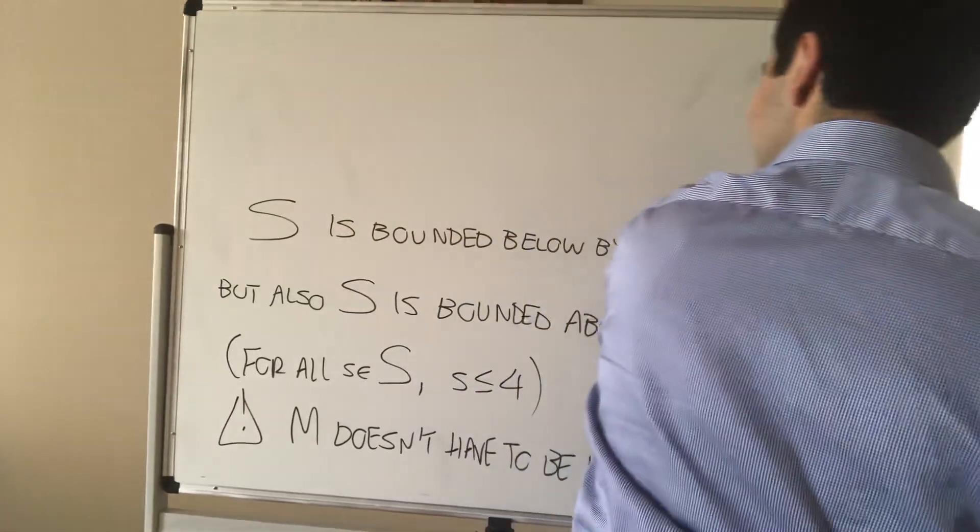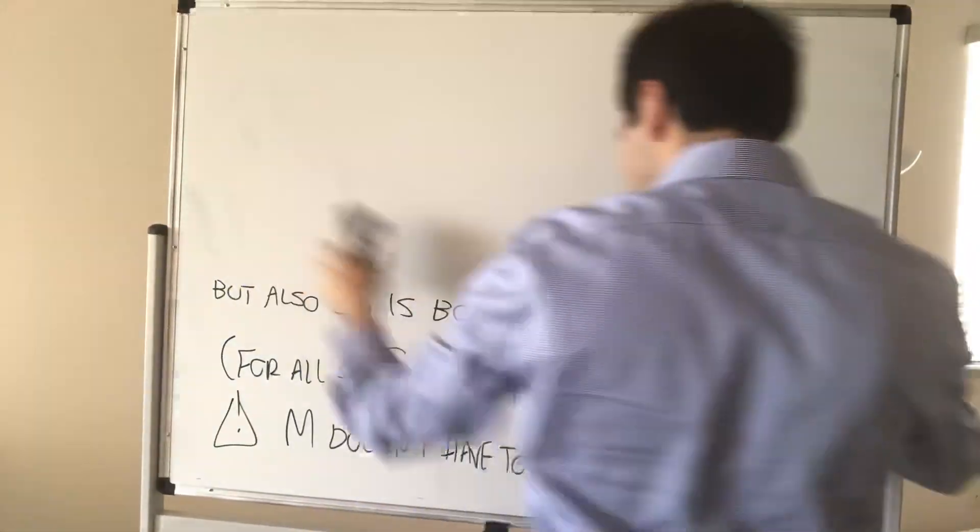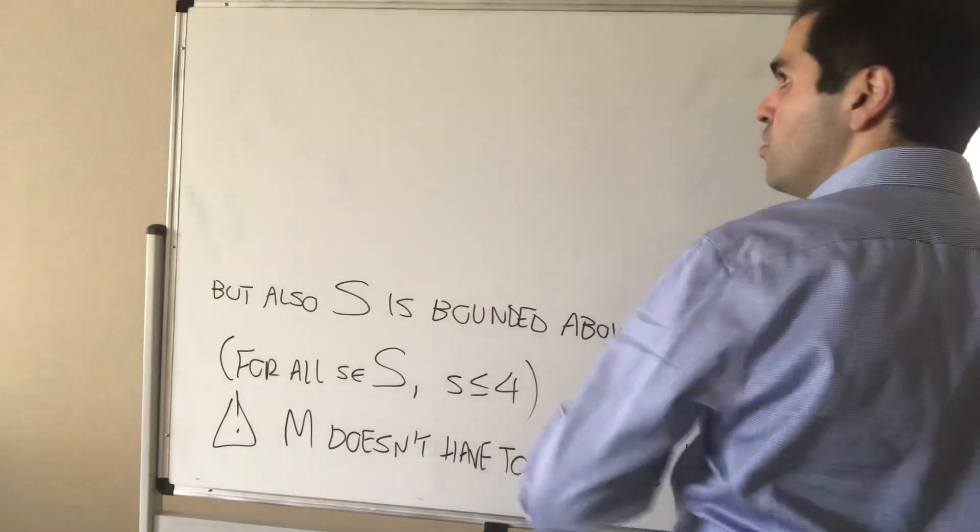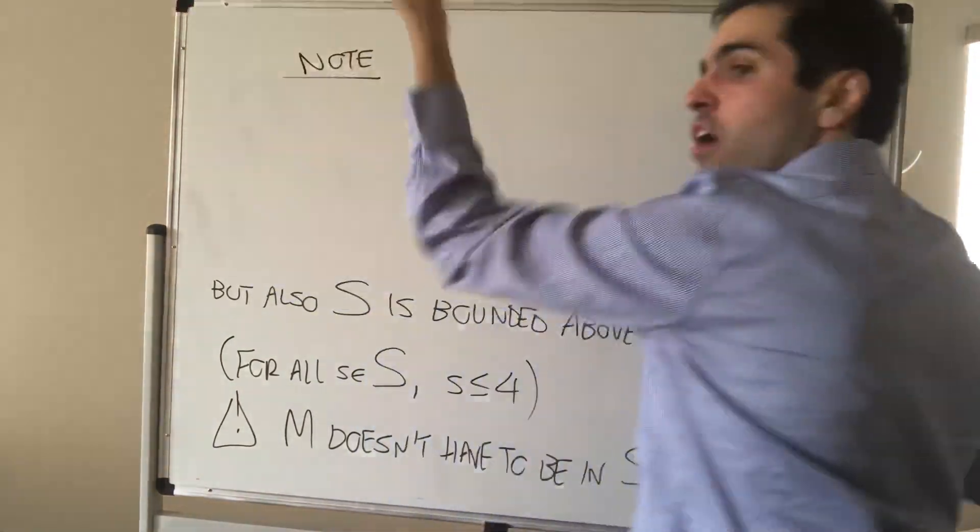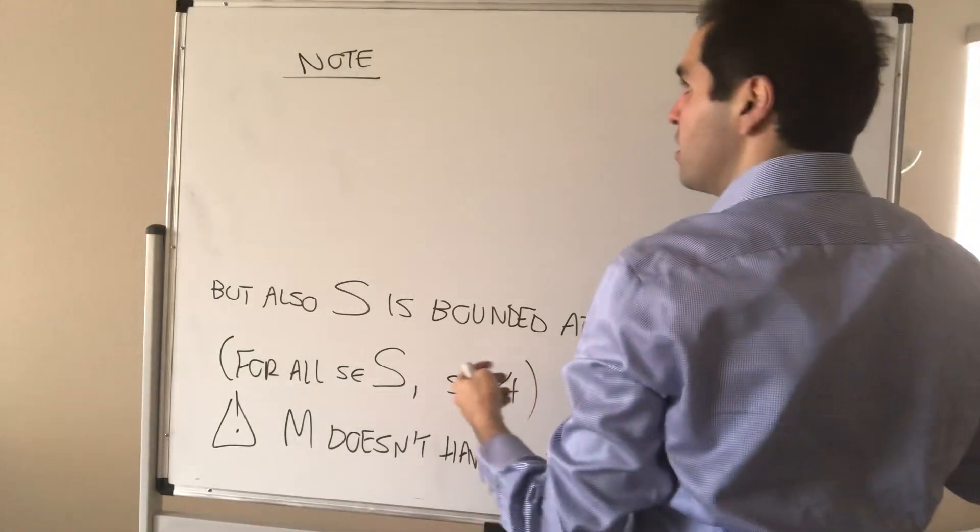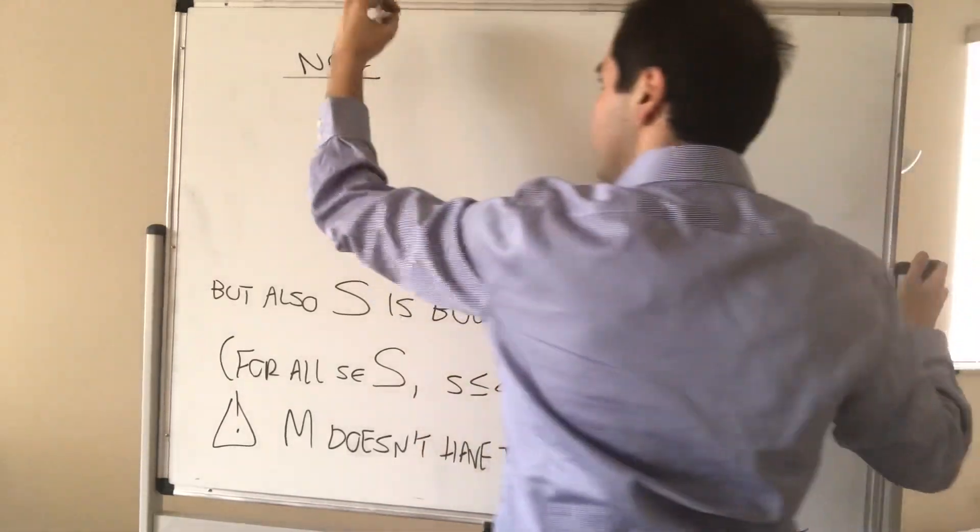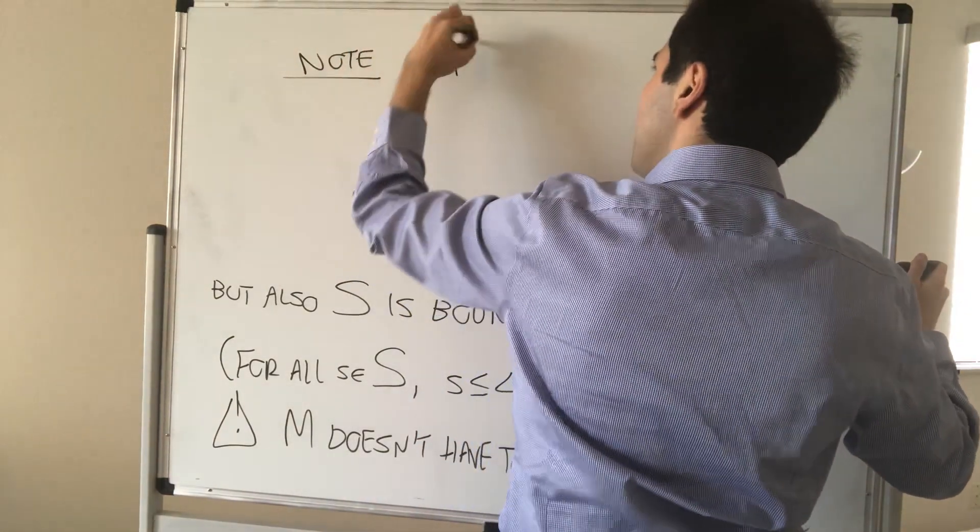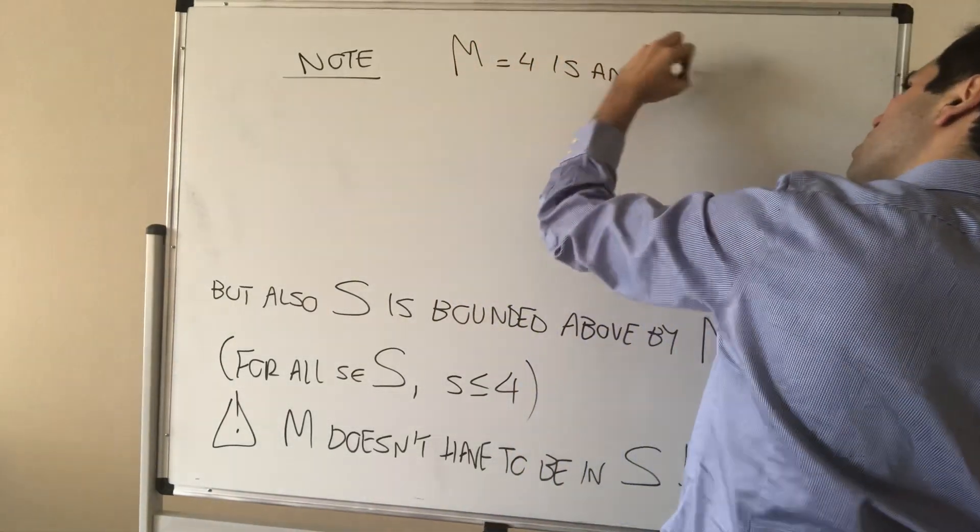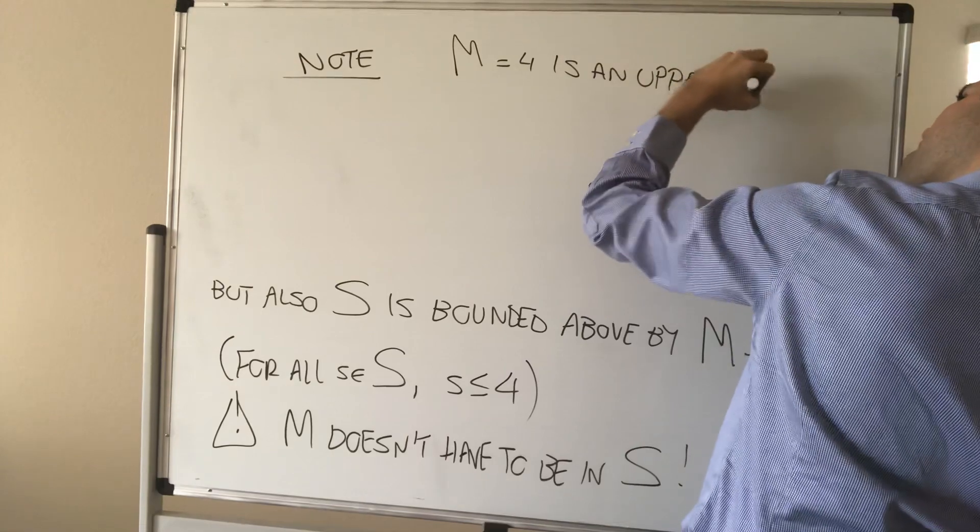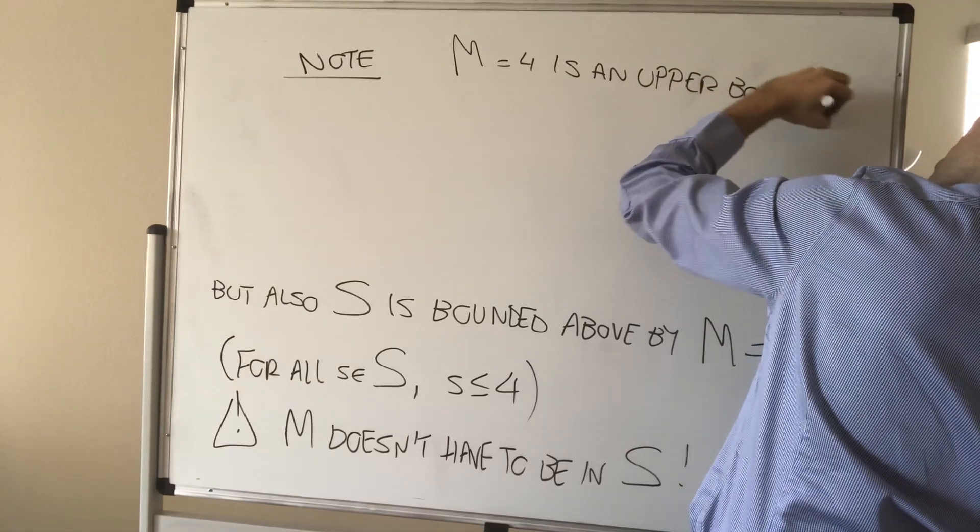And in fact, let's study this even more because this actually tells us a lot of things. So note, question, is the upper bound unique? Is there just one upper bound from your set? Actually, no. So note, M equals four is an upper bound for S.